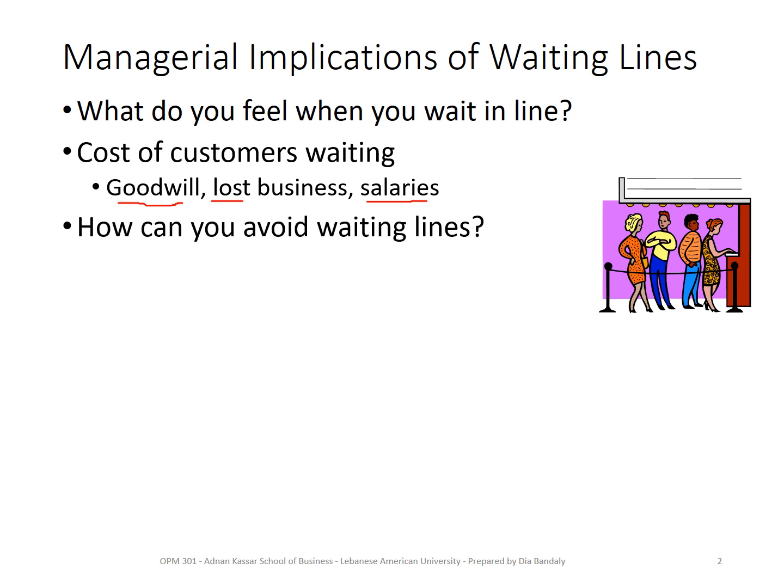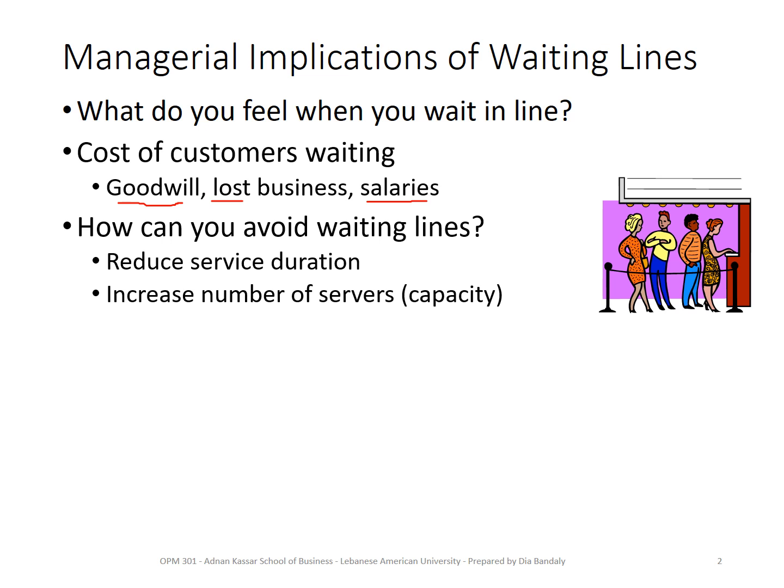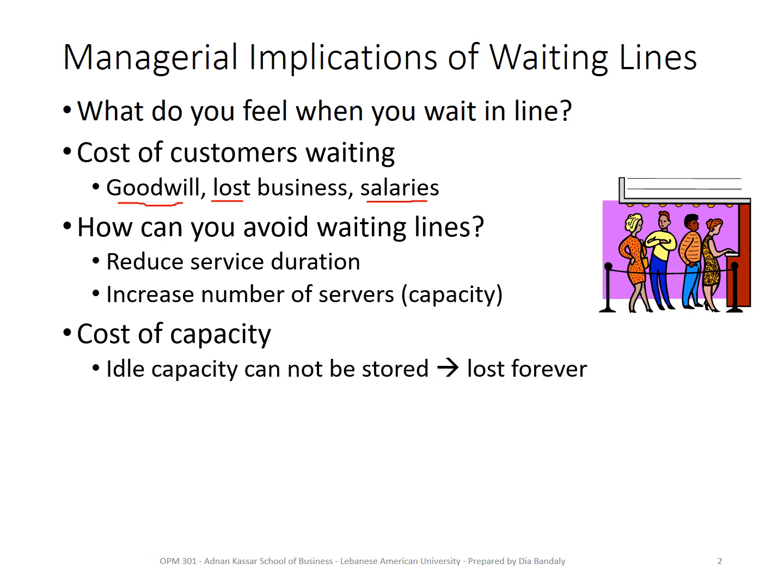How can management avoid waiting lines? They can do two main things: either reduce the service duration, or increase the number of servers to increase capacity. However, this is not a simple decision. There is a cost for capacity. In a service firm, if you have capacity that you are not using, you lose it forever — unlike manufacturing where you can keep surplus in inventory.